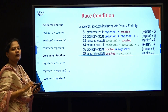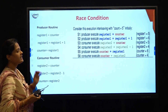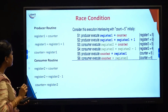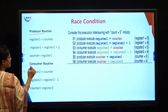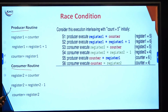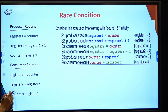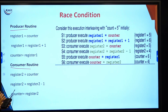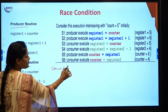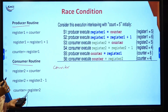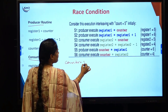In process synchronization, we will first identify the problem. We will deal with a race condition. Assume we have two routines here — one is your producer and the other is your consumer. The producer will increment a counter value whereas the consumer will decrement the counter value. The counter is a shared variable used by both. The initial counter value is equal to 5.